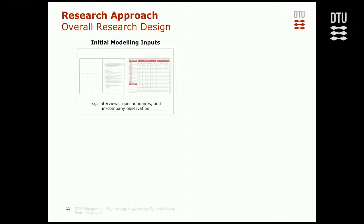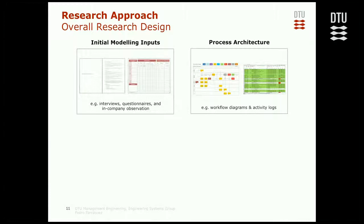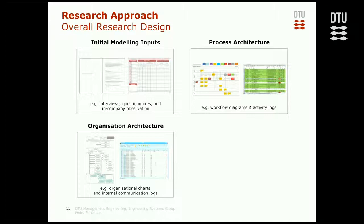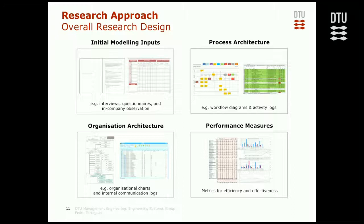In terms of the research approach, I start with research clarification in a more explorative and qualitative way, supported by interviews, questionnaires, and in-company observation. This allowed me to check that I was solving the right problem and that these things were feasible and useful in industry. Then I moved into gathering more structured information. In the process architecture, I look into workflow diagrams showing the formal process, and also into activity logs and other sources showing the actual process as it evolves over time. In terms of organization architecture, I look into organizational charts for the formal organization, but also into internal communication logs to see communication happening over time.